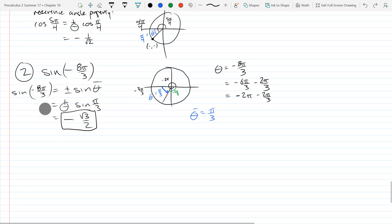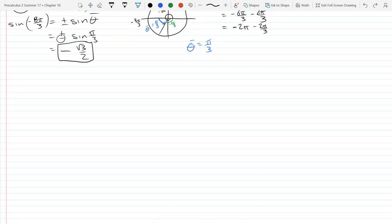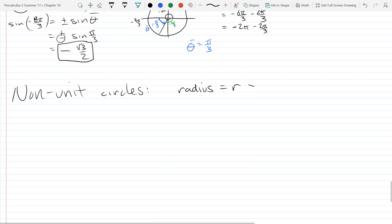So the last part of this chapter, or this section, is non-unit circles. For non-unit circles, our radius is going to be R, greater than zero. You don't want a zero radius circle—kind of boring. Negative radius doesn't make any sense. So our circle has to have a positive radius.